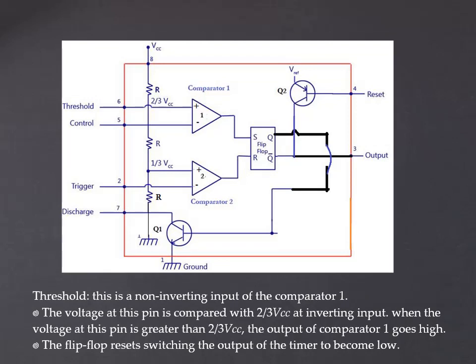Next is the threshold, pin number 6, connected to the non-inverting input of comparator 1. The voltage at this pin will be compared with 2 by 3 VCC at the inverting input. When the voltage at this pin is greater than 2 by 3 VCC, the output of the comparator will be high and the flip-flop will reset. That is, Q will be 1 and Q bar will be 0. When Q bar is 0, the output will be low.